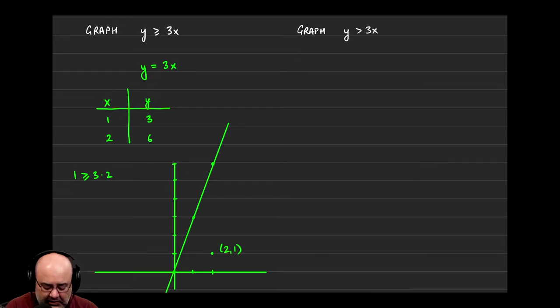Greater than or equal to. 1 is greater than or equal to 3 times 2, which is 6. Now, is that a true statement or is that a false statement? 1 is greater than or equal to 6. Hopefully everyone agrees that that's obviously false.